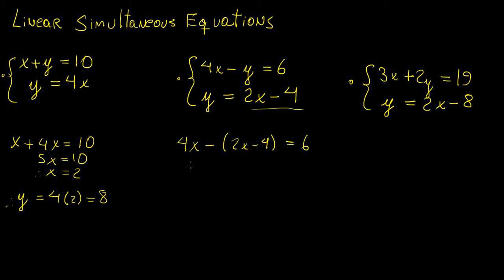That's going to be 4x minus (2x minus 4) equals to 6. We're going to expand this one out. 4x minus 2x plus 4 equals 6. We're going to subtract 4 from both sides. That's going to be 2. And here we have 4x minus 2x. That's going to be 2x. And then in the end, we get that x is going to be equal to 1.